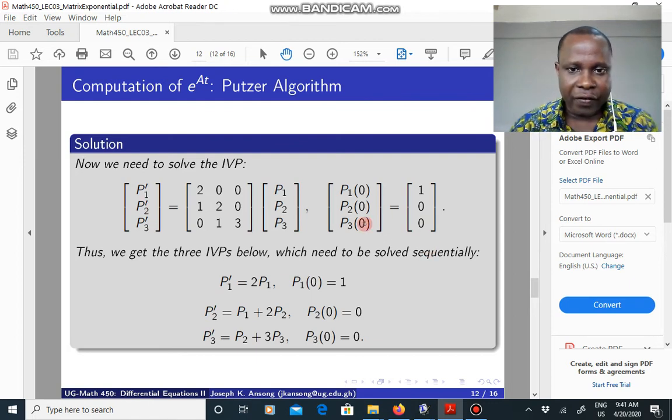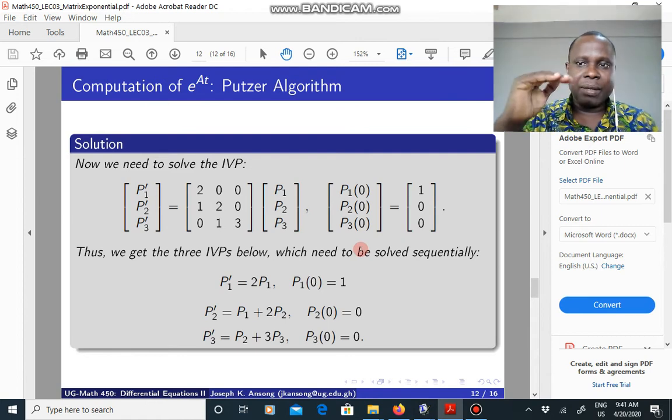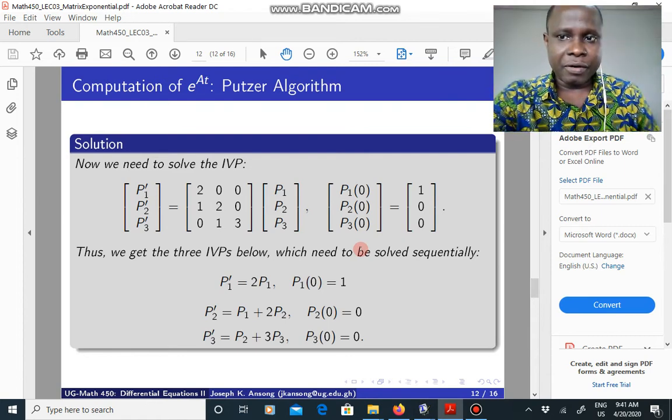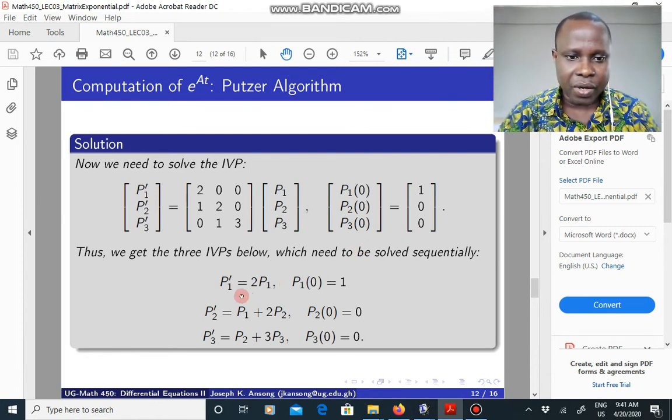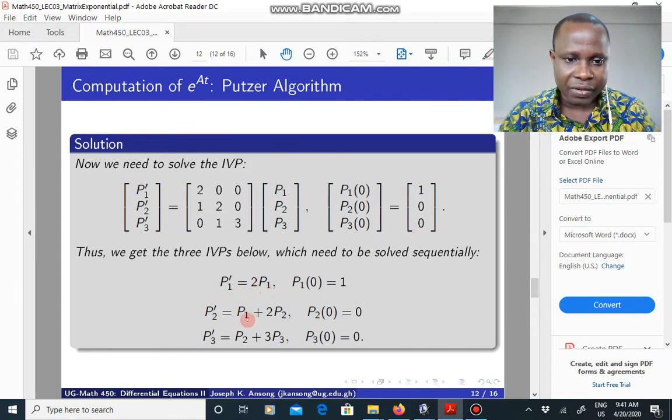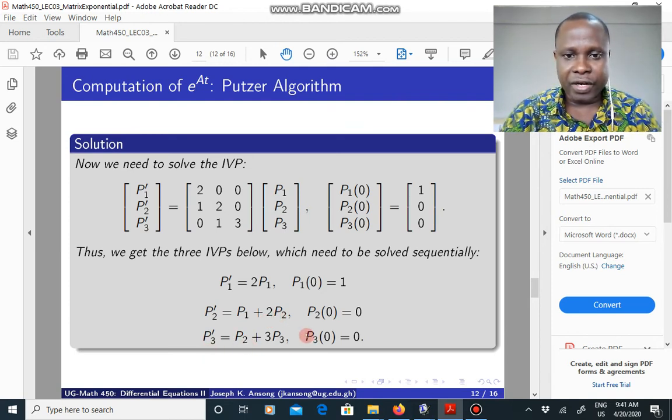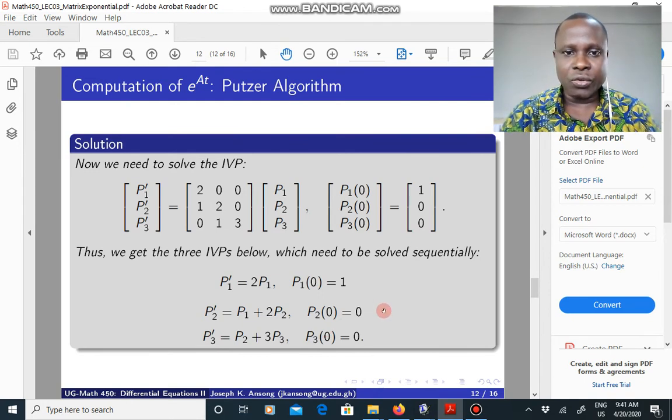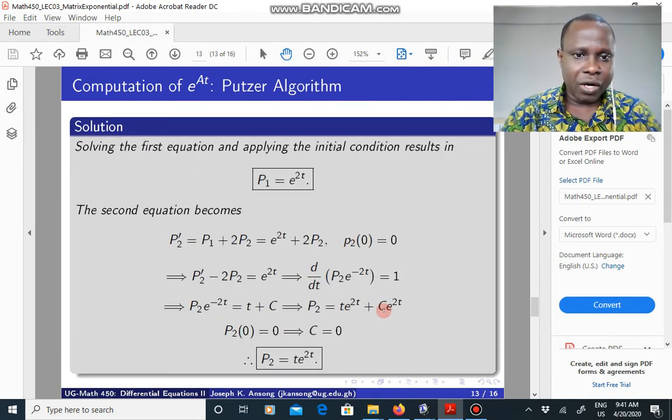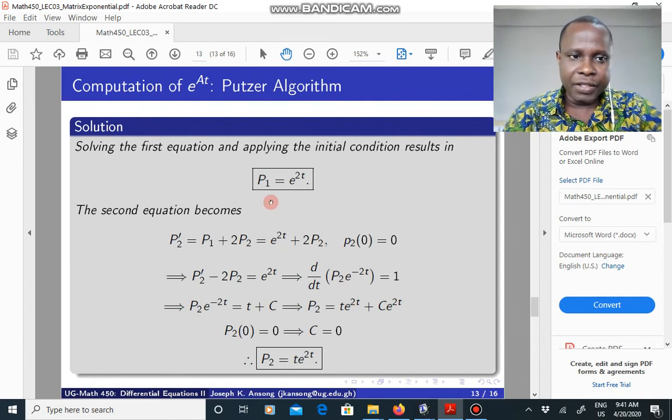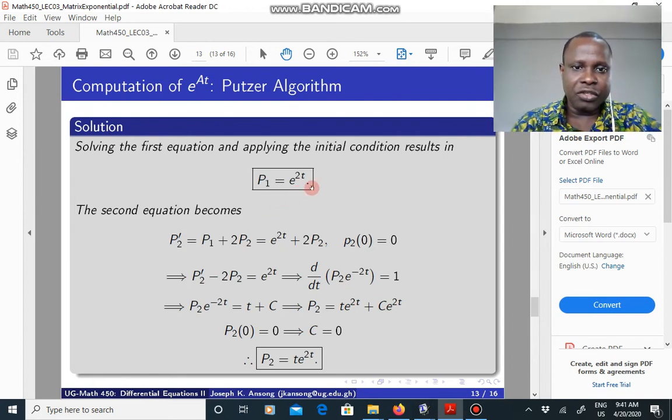So from here you get 3 equations, 3 initial value problems. And you need to solve them sequentially from the first one to the final one. Solve this one to get P1. Once you have P1 you plug it into the second one, solve for P2. Once you have P2 plug it into the third one and solve for P3. That gives you your P1, P2, and P3. So if you solve for P1 it's easy, you get E to the 2t. You can do that by separation of variables.